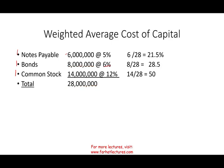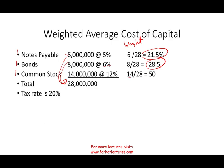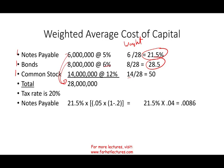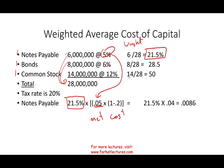First, we compute the weight of each component. Notes: 6/28 = 21.5%. Bonds: 8/28 = 28.5%. Common stock: 14/28 = 50%. Because debt is tax-deductible, we find the net cost of debt. For example, on a $1,000 loan at 5%, we pay $50 in interest but save $10 in taxes (50 × 20%), so the net cost is $40, or 4%. The formula is: interest rate × (1 − tax rate).